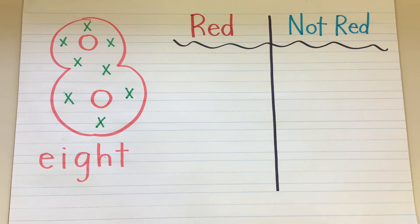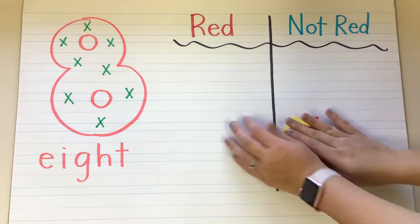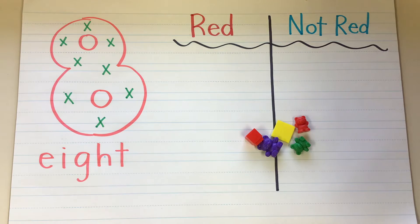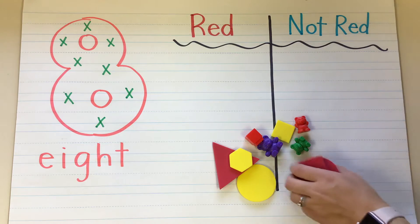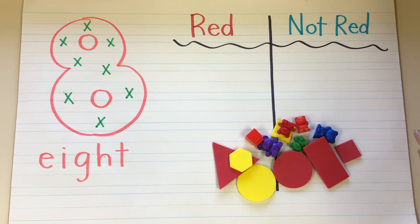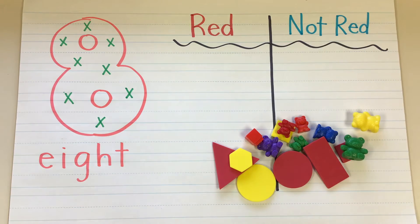Today we're going to sort by objects that are red and objects that are not red. So I'm going to show you, I'm going to put some objects down here and we're going to sort them together. We're going to sort our objects and figure out which ones are red and which ones are not red.